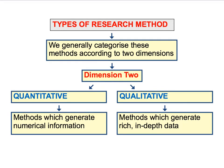Just as with primary research you could produce either quantitative or qualitative data, secondary data can also be presented either in the form of numbers or statistics — in other words, quantitative data — or it can be based on a qualitative approach where we're using secondary data that is based on rich, in-depth data. In this first screencast we're going to focus on the use of quantitative secondary data.